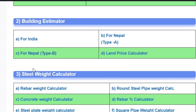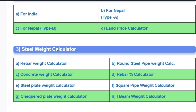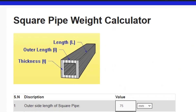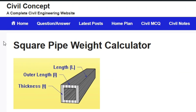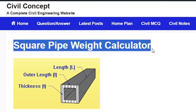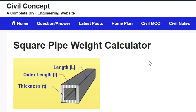In the steel weight calculator, you can see option number F — click on that link and you will reach the calculator. Here you can see the Square Pipe Weight Calculator.